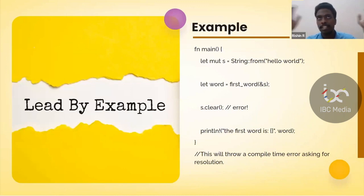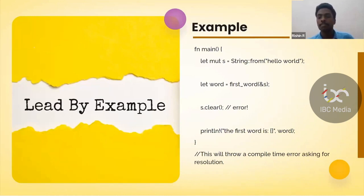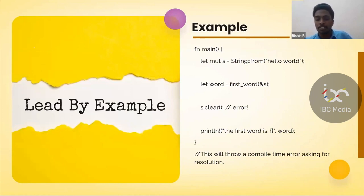This is not the case in other languages like C, which allows all these kinds of memory errors. What happens is `let word` contains the index of the first word, then we clear the string. The word variable still holds the index, but the string has been entirely cleared, so the index no longer points to anything relevant. This would be considered a compile-time error in Rust, which is great because Rust can find these memory errors by default at compile time, so we do not have to face them during execution.